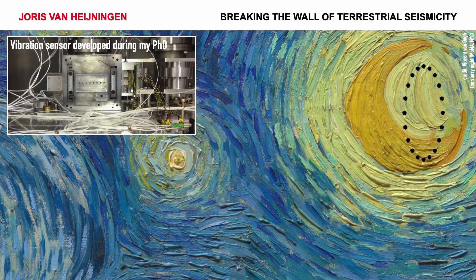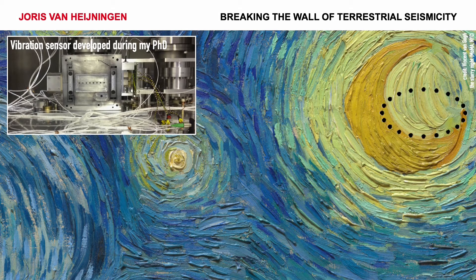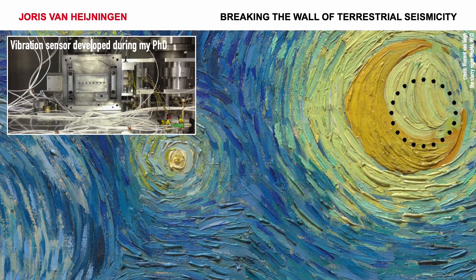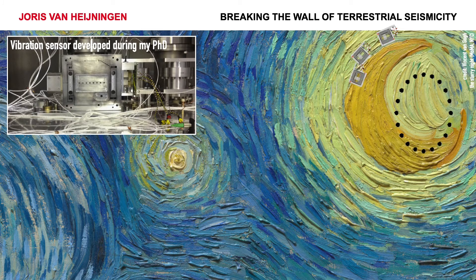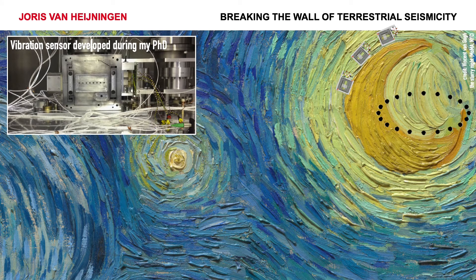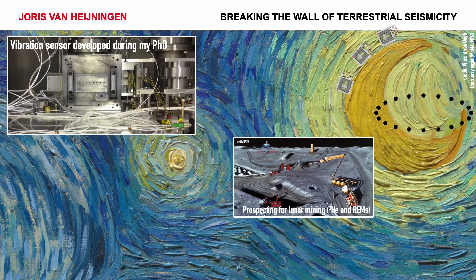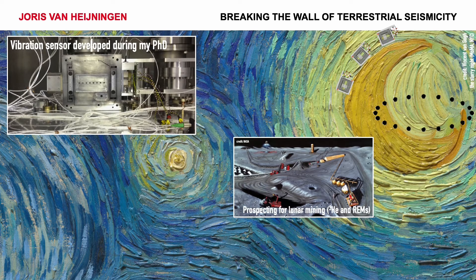The Moon, just like the Earth as you saw in the previous animation, wobbles. By introducing an array of these sensors on the Moon we can measure gravitational waves at low frequency. Having such an array on the Moon will also allow us to do prospecting for lunar mining — we can look for helium-3 or the rare earth metals found in your phone or laptop.